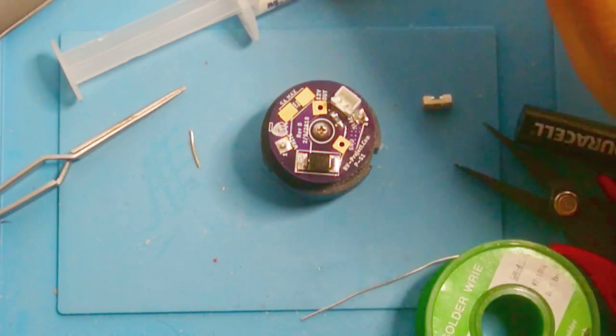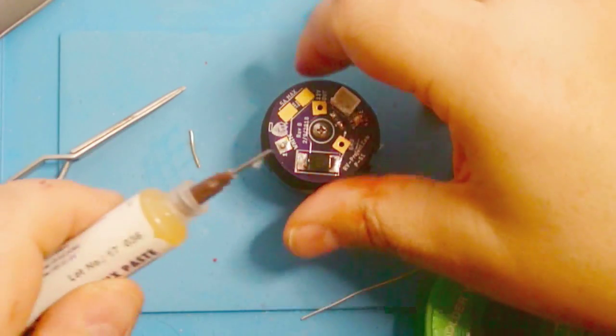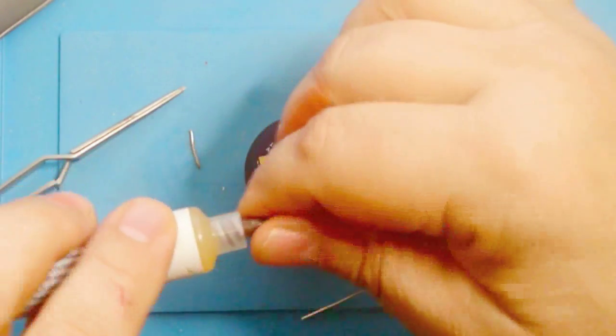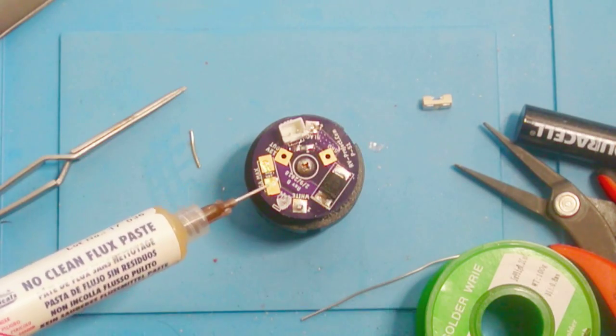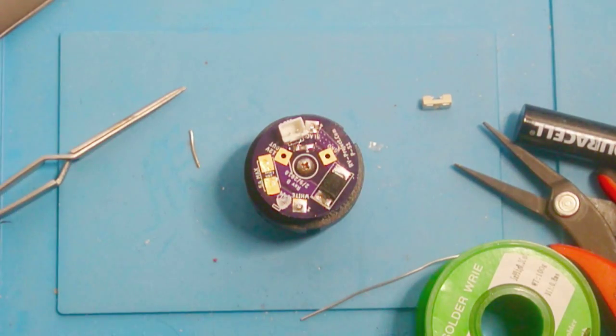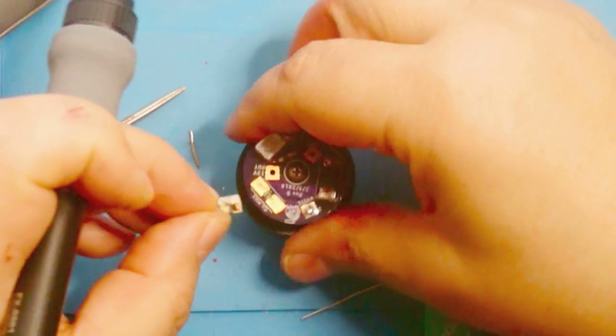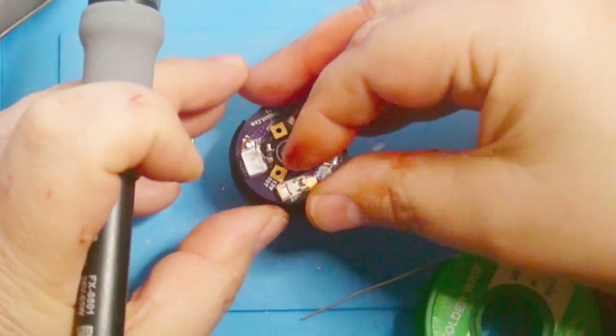Since we're using a TVS diode, I always like to have a fuse anyway. But again, as I said, this is connected directly to the battery. I just feel having a fuse is the prudent thing to do. This is actually a fuse holder. It's a pretty small one, but it's still a fuse holder.